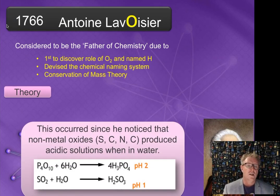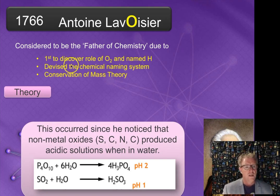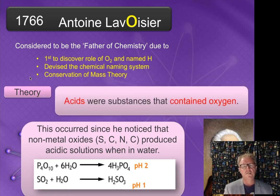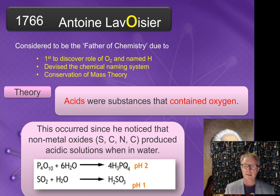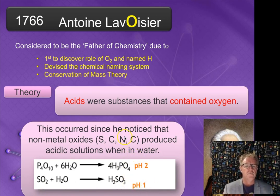Antonio Lavoisier was the next scientist. He's considered the father of chemistry because he was the first to discover the role of oxygen and named hydrogen. He devised the chemical naming system, which was very important because it was very confusing back then. He said that acids were substances that contained oxygen, because he noted that when he got metal oxides and mixed them with water, they produced acidic solutions. For example, phosphate produces phosphoric acid, and sulfur produces sulfurous or sulfuric acid. He said it must be the properties of oxygen that result in the acidic properties of acids.